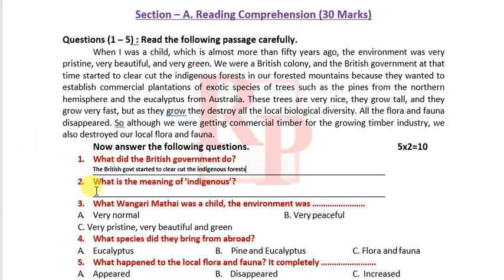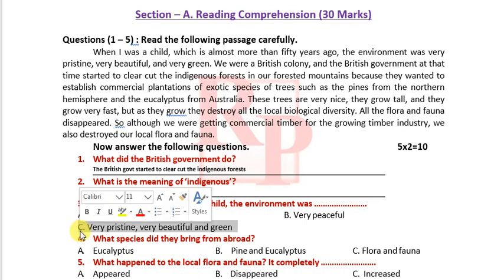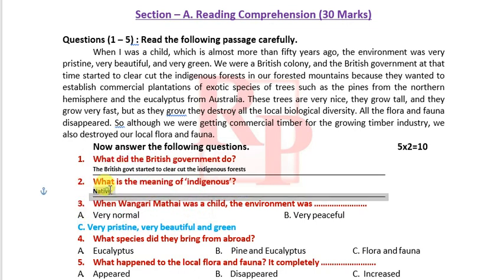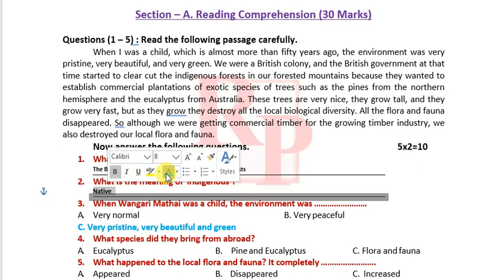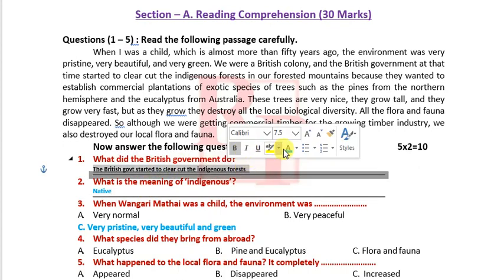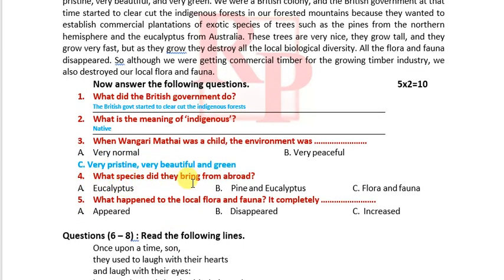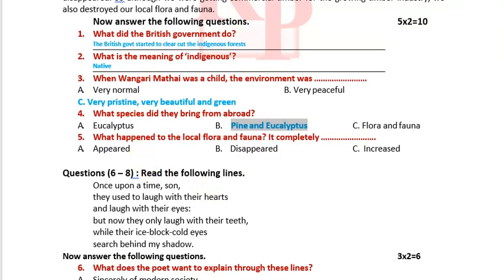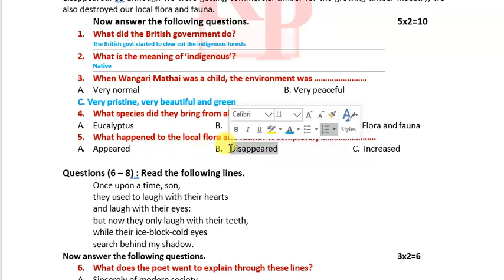The next question: what is the meaning of 'indigenous'? Indigenous means native. Third question: when Wangari Maathai was a child, the environment was very pristine — very beautiful and green. What species did they bring from abroad? Pine and eucalyptus. What happened to the local flora and fauna? The local flora and fauna completely disappeared.